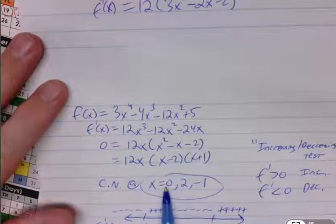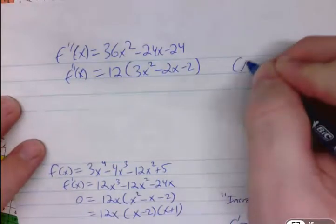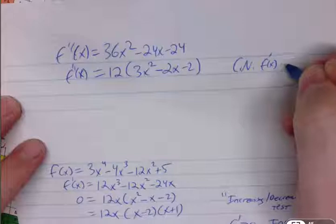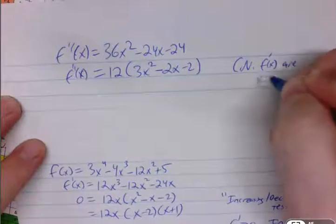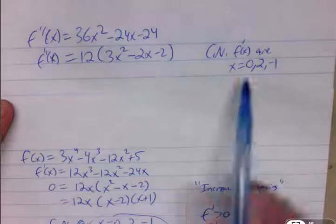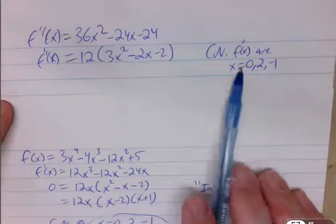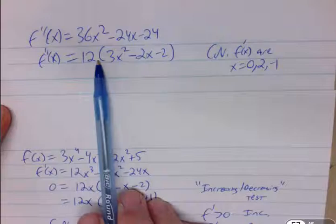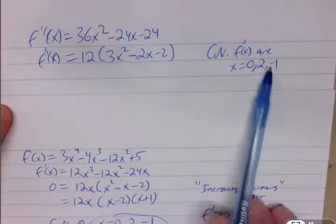So if I know I have a critical number here, I could use that. So I'm going to say critical numbers for f of x, or f prime of x, are x equals 0, 2, and negative 1. So if I know for sure that I have 0 slope at these particular x values, if I can determine the concavity, then I can tell if I have a local max or a local min.